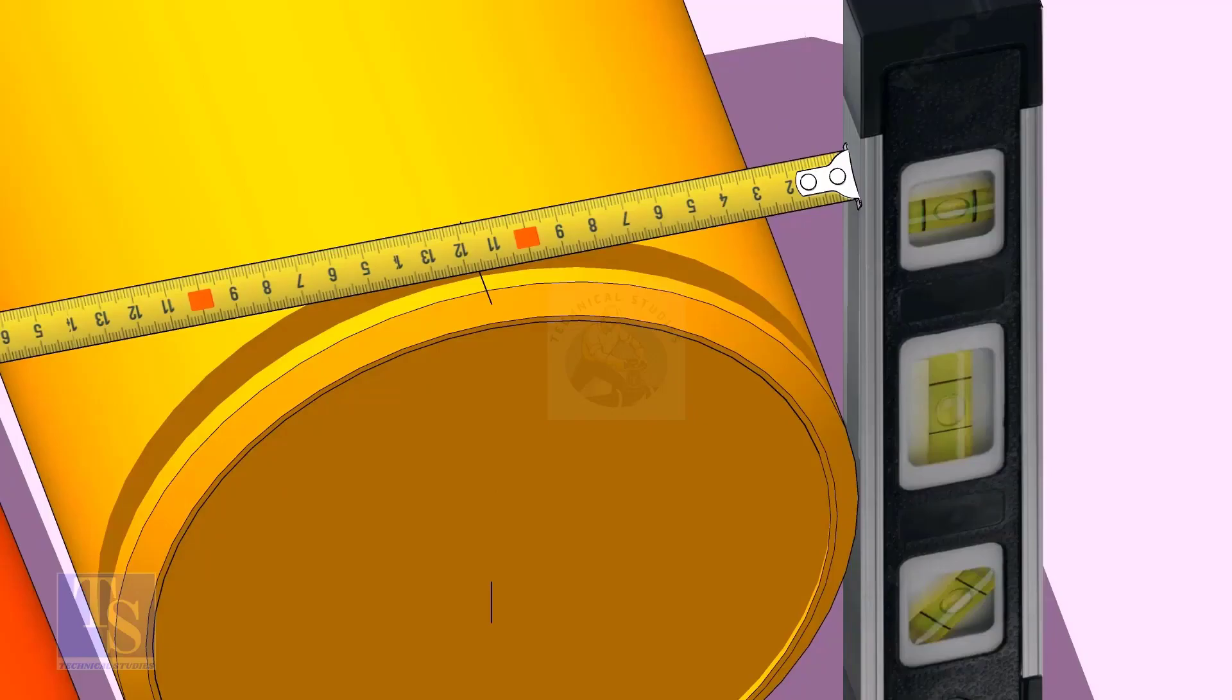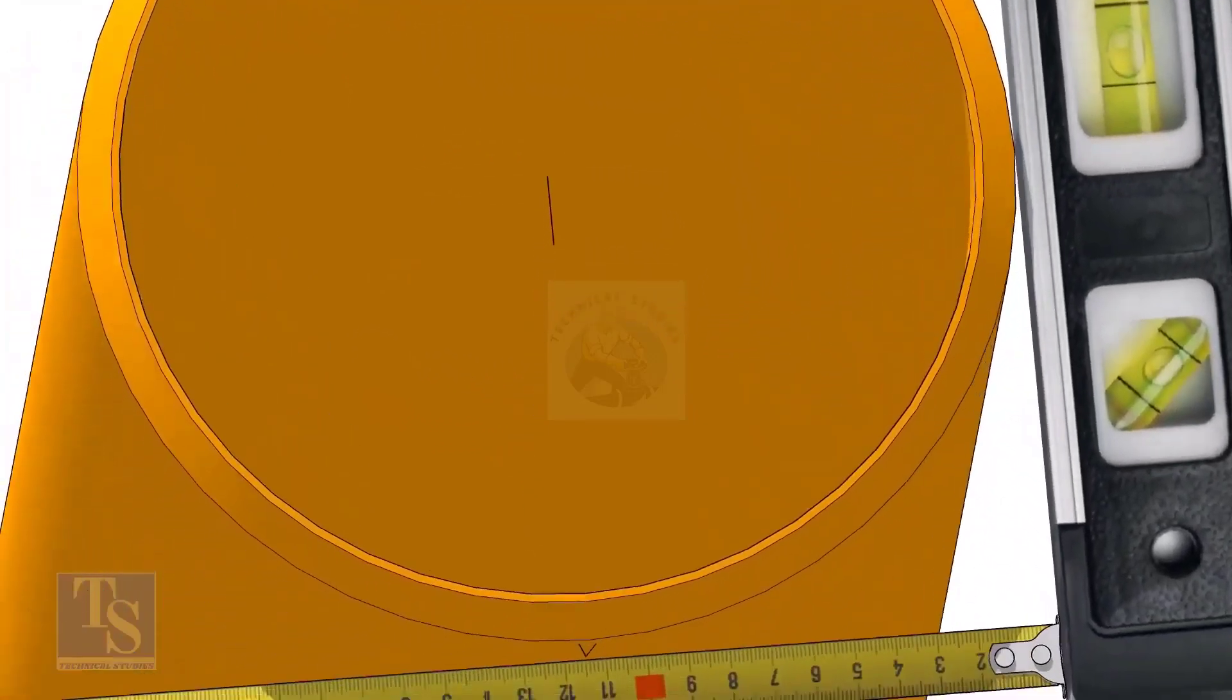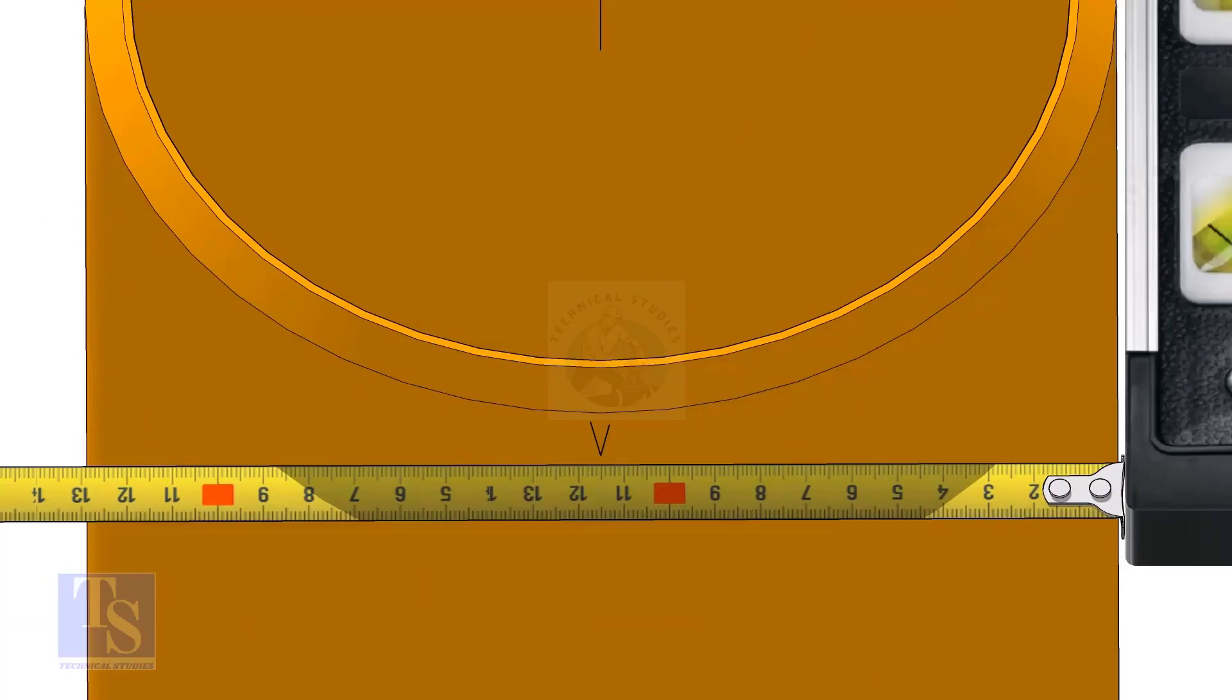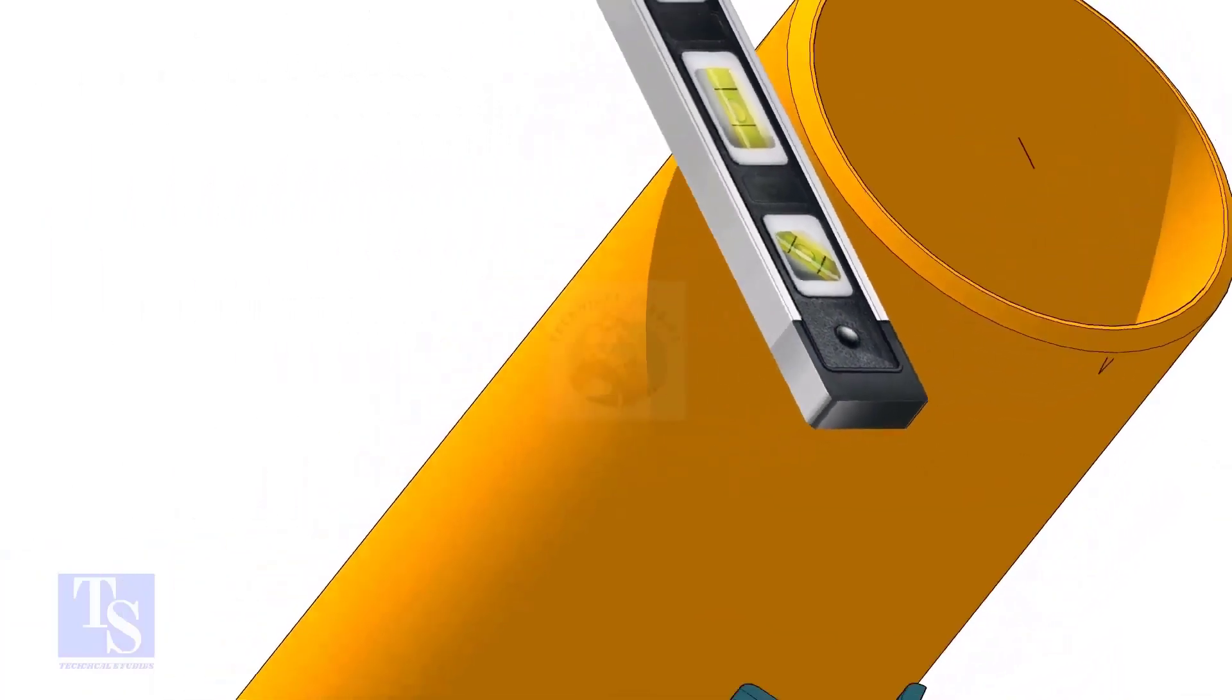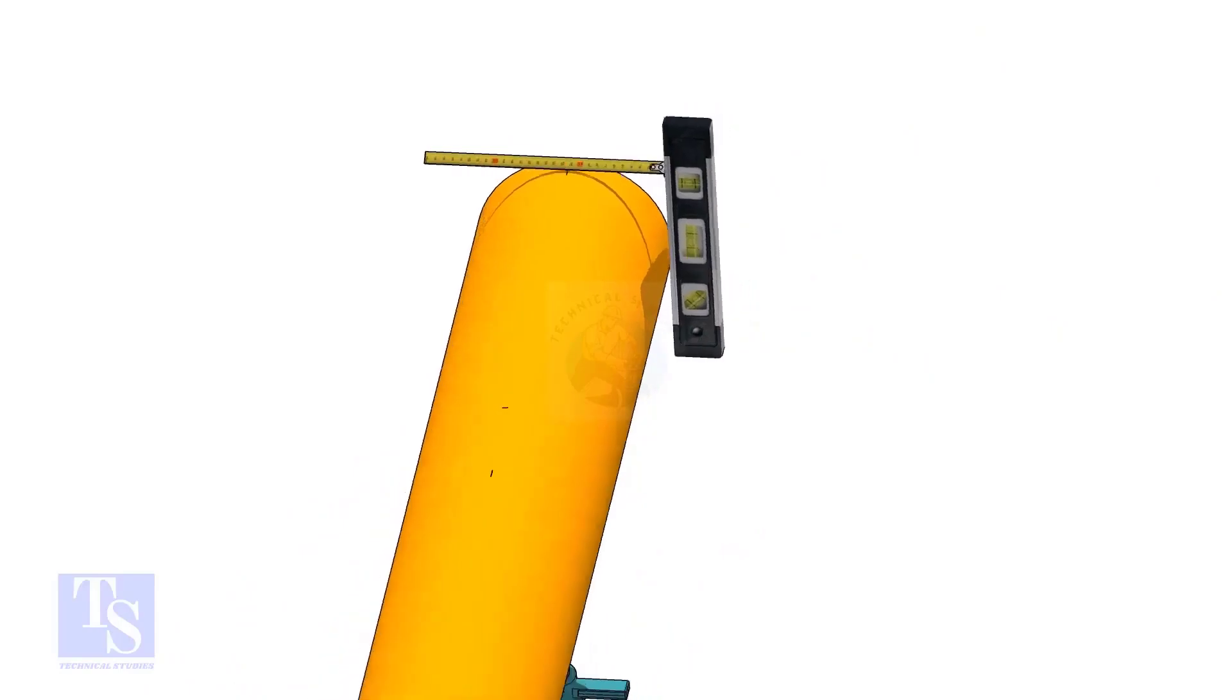Hold a level bottle firmly and vertical at the side of the pipe as shown. Mark half OD at the top and the bottom side of the pipe. Cross check the dimension from the opposite side to ensure the marking is correct.